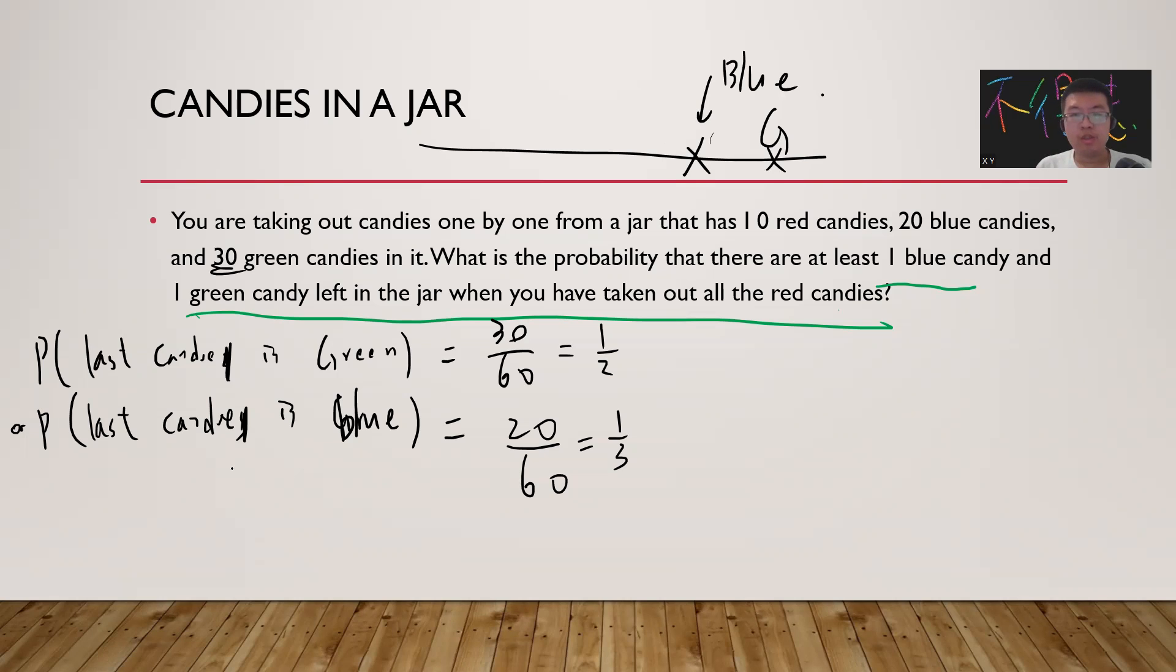What's the probability that the last is blue? You forget about all the green, right? Because you already made sure that the last is green, so you can neglect all the green. The last is blue.